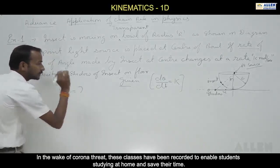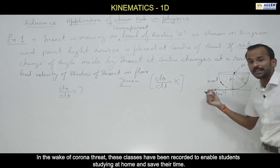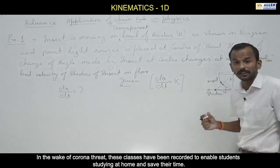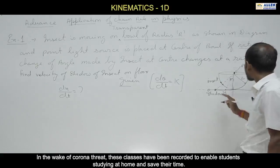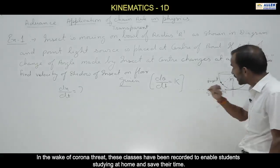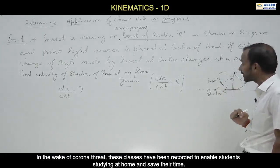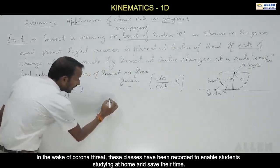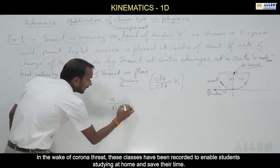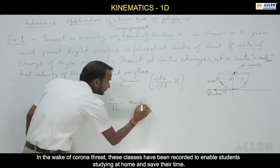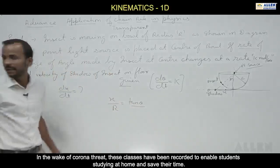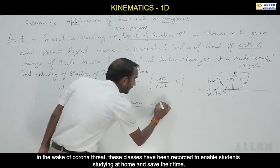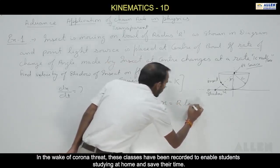We have to find dx/dt — how fast the position of the shadow is changing with respect to time gives velocity. Now I need a relation between x and theta because theta is given. Can I relate x and theta? Yes — from the geometry, x/r = tan(θ), so x = r·tan(θ).